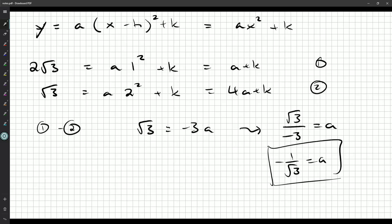Can we work out k? Well, we should be able to. Just plug it back into 1. I know that 2√3 is going to be a, which is -1 over √3 plus k. If I multiply everything by √3, I'll get 6 is equal to -1 plus √3k. So if I add one to both sides, I'll get 7 is equal to √3k. So k is 7 over √3.